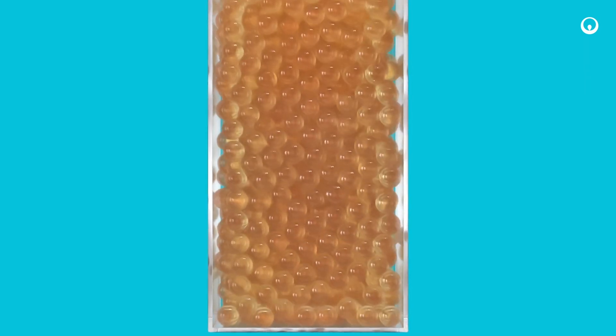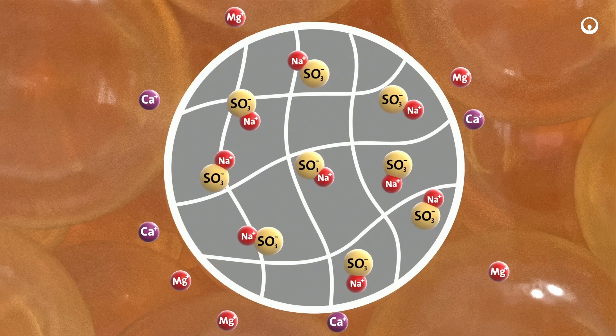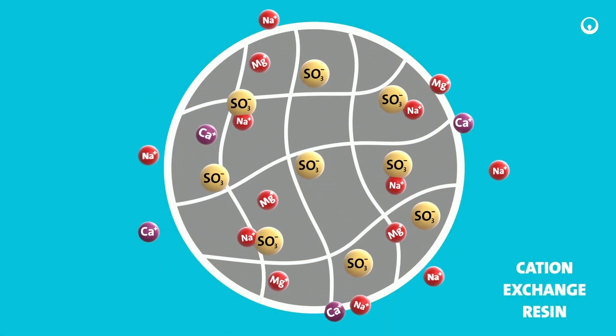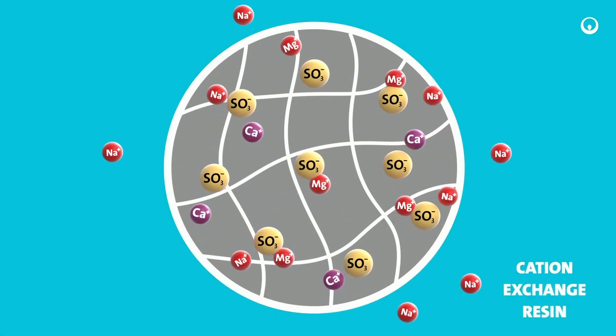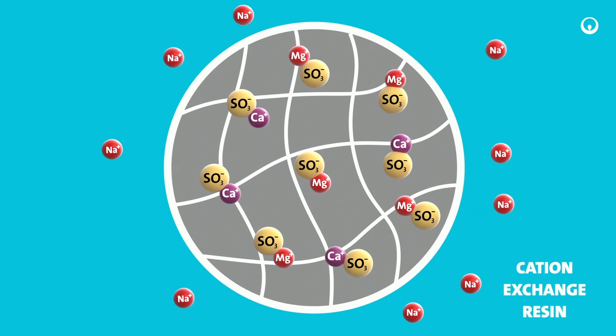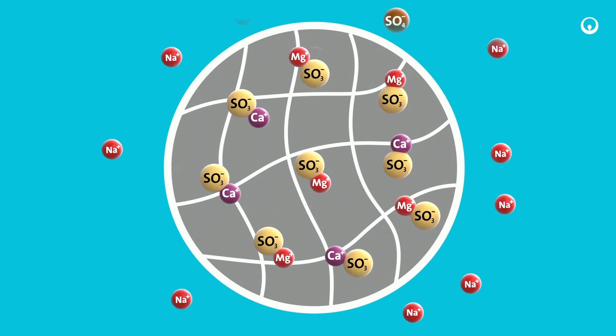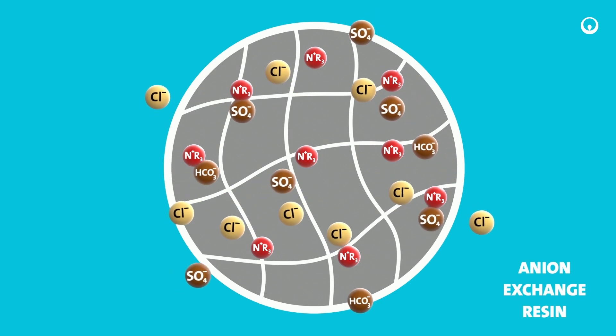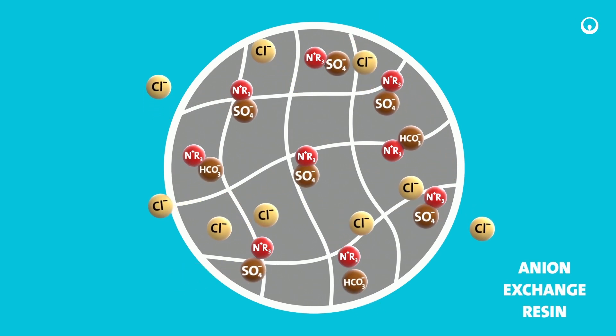An ion exchange resin is a resin or polymer that acts as a medium for ion exchange. Ion exchange can only take place efficiently when the resin has a higher affinity for the mobile ions. Cation exchange resin in sodium form exchanges high-hardness ions into cation resin beads, while anion exchange resin in chloride form replaces sulfate and bicarbonate anions in the water.